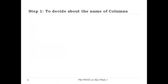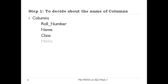For creation of the student table, the first step will be to decide about the fields or attributes for which we wish to store the data. Normally, we are interested to store role number, name, class, marks and date of birth information of a student. So for this case study, we will consider these columns. However, you can add more columns depending upon your requirement. It is important to note that blank space is not allowed in column names.